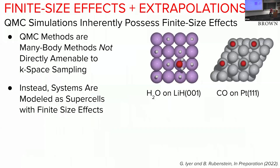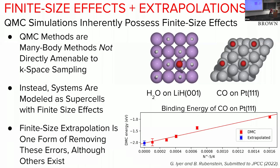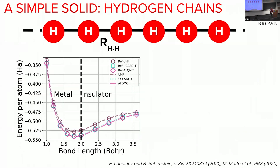The first topic is extrapolation to the thermodynamic limit. QMC methods are many-body methods where you can do K-point sampling, but you still need finite-size extrapolation to correct for finite-size effects. That means taking cells and extending them in multiple directions, calculating energies, and extrapolating those energies down. For the CO on Pt system, larger and larger systems must be simulated and then extrapolated to get the thermodynamic limit binding energy.